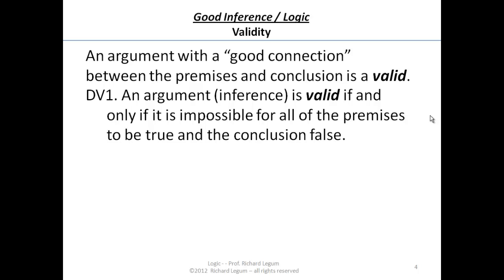The first definition of validity: an argument or an inference is valid if and only if it is impossible for all of the premises to be true and at the same time the conclusion is false. So if we have a good connection between the premises and the conclusion, it's impossible for all the premises to be true and at the same time the conclusion false.